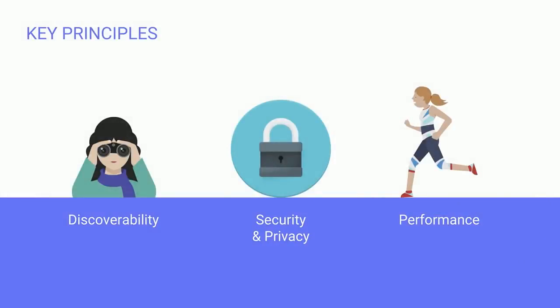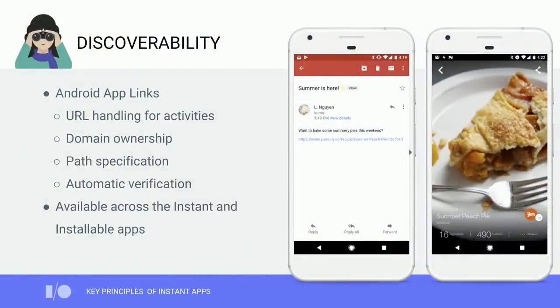Now that you know what Instant Apps are and what user experiences they enable, let's talk about a few key principles to keep in mind as you start building your Instant App. You'll see examples of these principles throughout the rest of this talk. I'll cover discoverability, security and privacy, and performance. Instant Apps are launched from URLs, so the first step is to consider the experiences within your app and make them URL addressable.